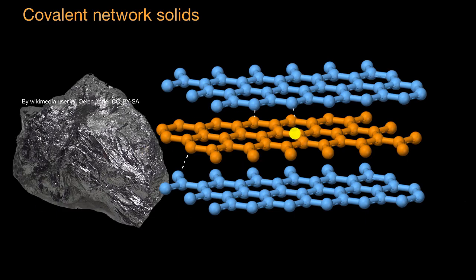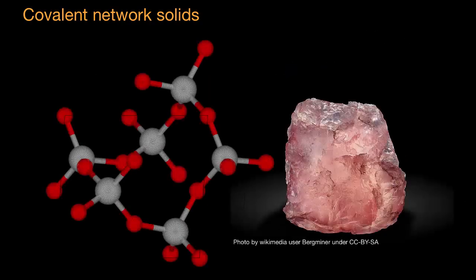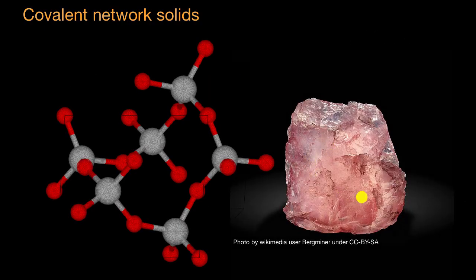Graphite, for example, sublimes at 3,642 degrees Celsius. The silicon carbide we looked at at the beginning of this video decomposes at 2,830 degrees Celsius. This right here is a picture of quartz, which is a very common form of silicon dioxide, another covalent network solid. This has a melting point of 1,722 degrees Celsius.